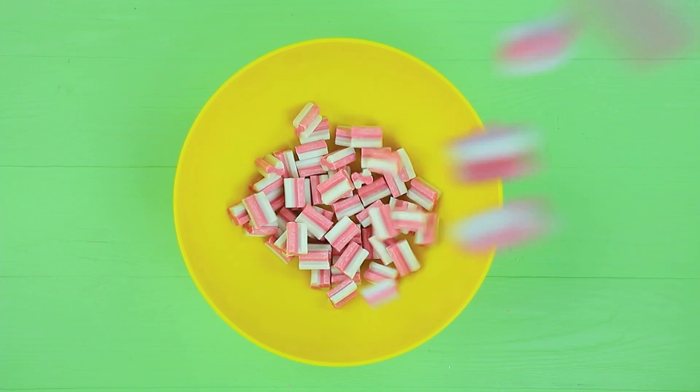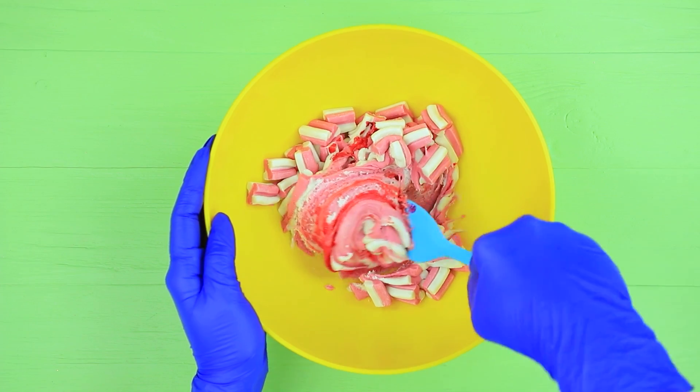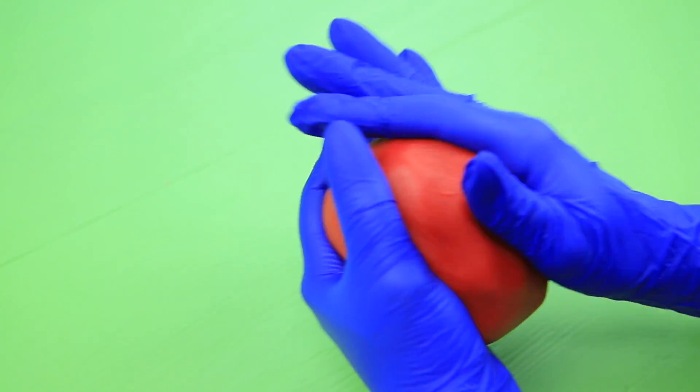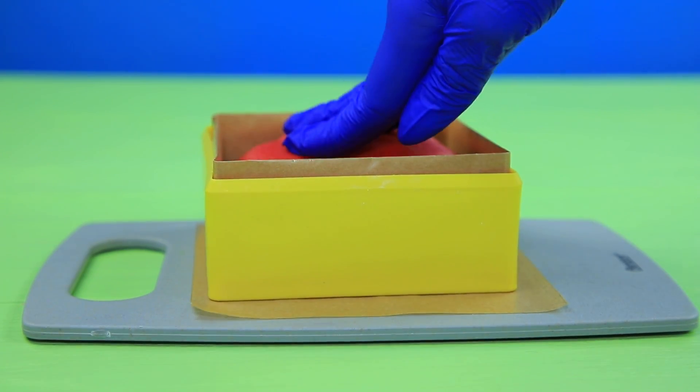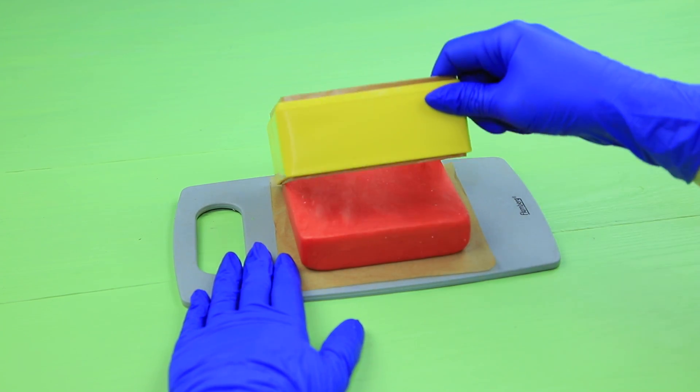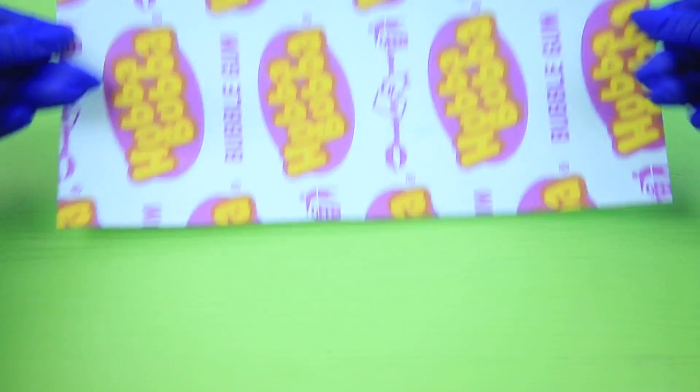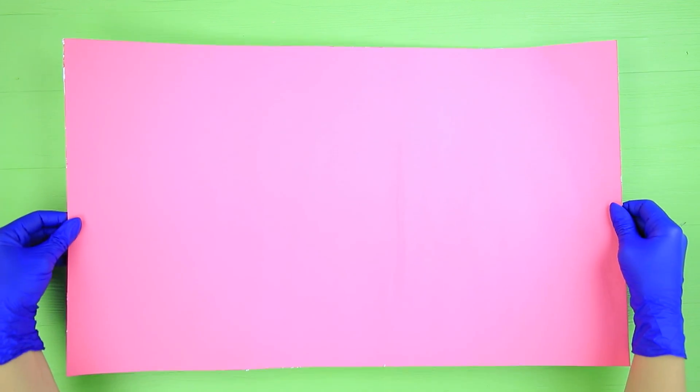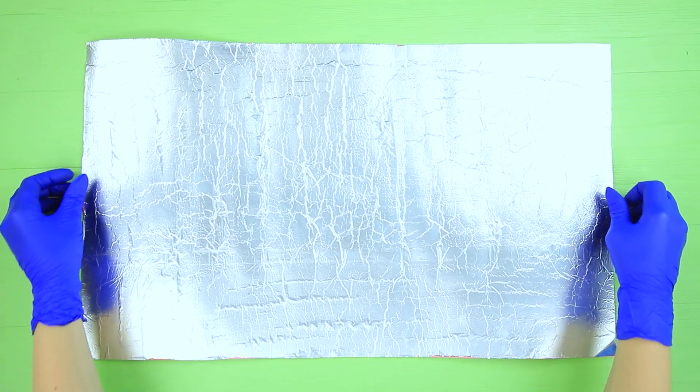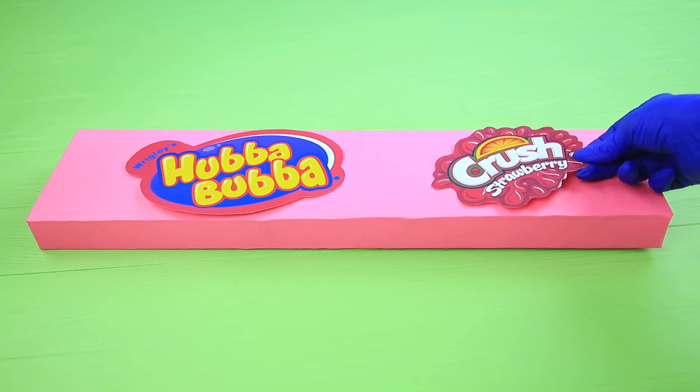Heat 14 ounces of gum in a microwave for one minute. Add food coloring and mix! Cover a square mold with parchment paper and put the mass into it. Wait for it to harden and press it down to get a rectangle. Print out a big Hubba Bubba label and cover the back with tape. Wrap the gum in it. Cover a big sheet of pink paper with foil. Put the big gum onto it. Wrap up the package. Attach printed Hubba Bubba logos.